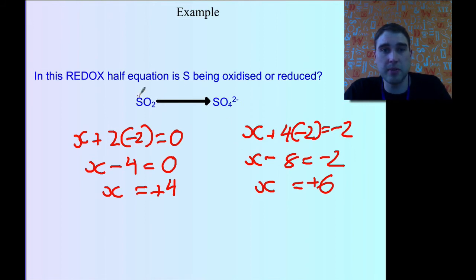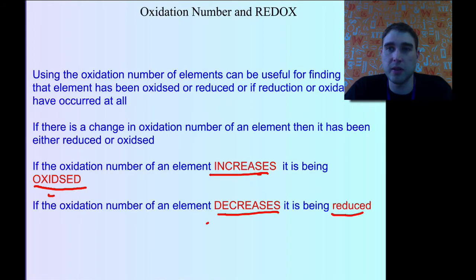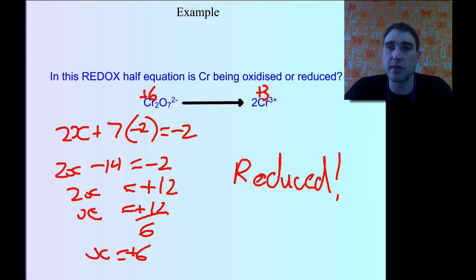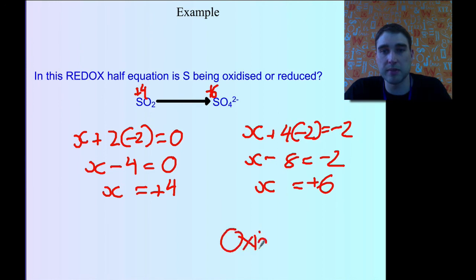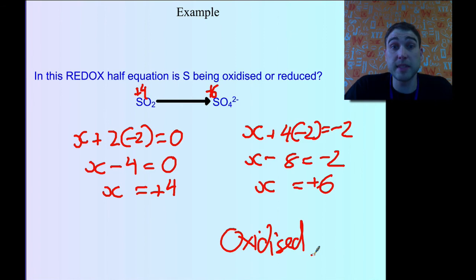So we've got plus 4 here and plus 6 here. Going back to our rule: if the oxidation number increases, then the element is being oxidized. We're going from plus 4 to plus 6, so the sulfur is being oxidized — it's getting bigger. That's a look at oxidation numbers and oxidation states and how to find them. That's it for Flippin' Science today.